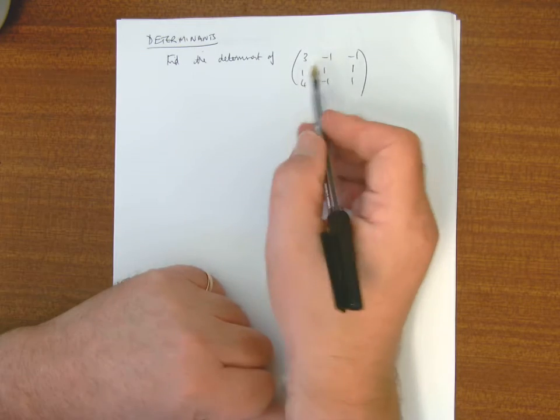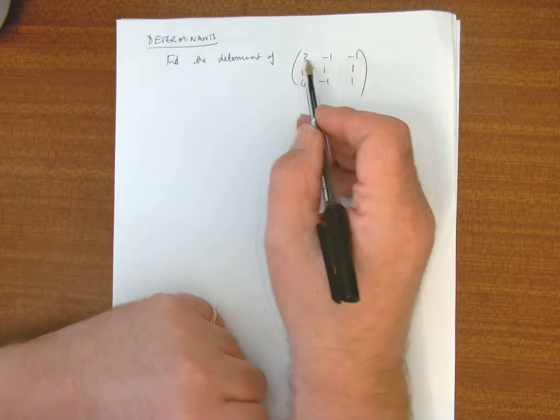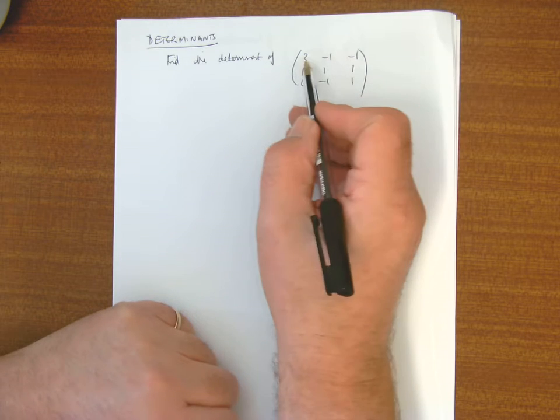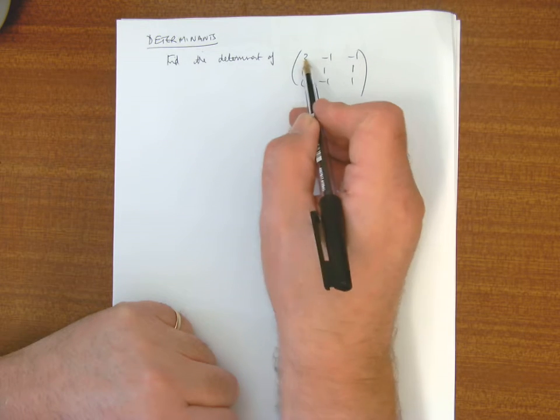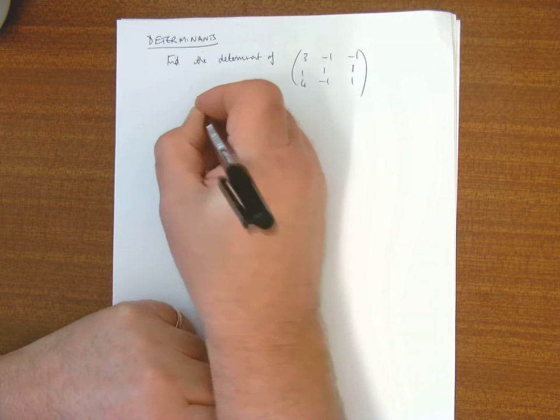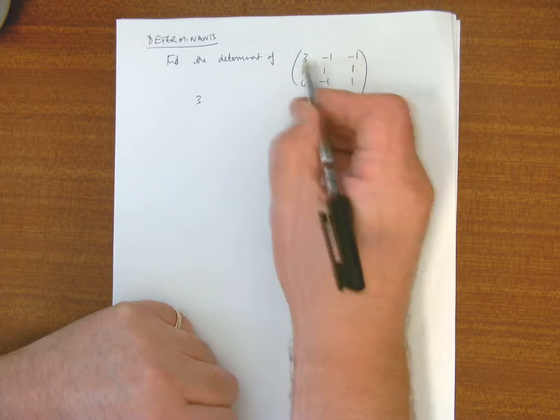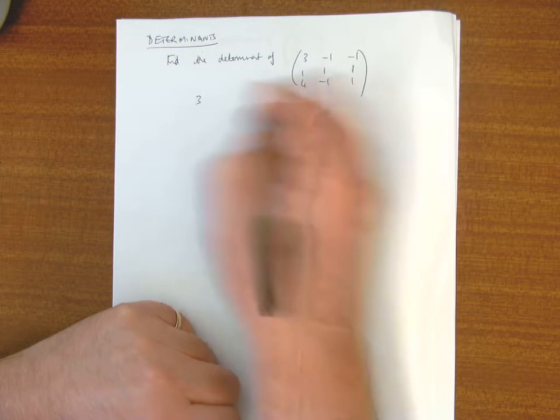To find the determinant of 3x3, this is in 3 parts. From the first row I take the first entry which is a 3, and with that 3 I block out the first row and the first column, and I'm left with these 4 entries here.